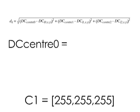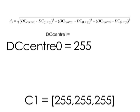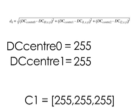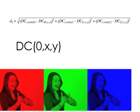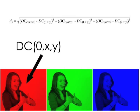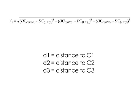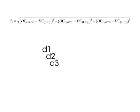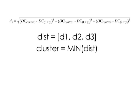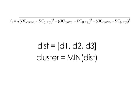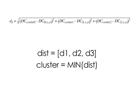The next step is to assign each of the pixels of the image to one of the classifications. Each pixel goes to the classification that it's closest to, and we do this using this equation. Where DC center 0 is the digital count of the center in the first band, DC center 1 is the digital count of the center in the second band, and so on. DC sub 0 xy is the digital count of the pixel at that xy location in the first band of the image, DC sub 1 xy is the digital count of the pixel at that xy location in the second band, and so on. This distance is computed from the specific xy pixel to each of the cluster centers.